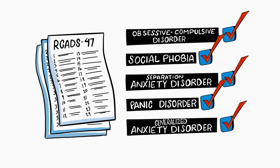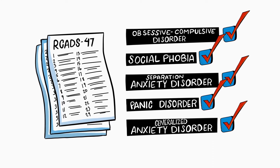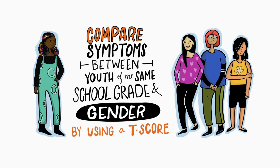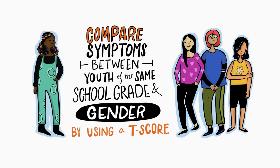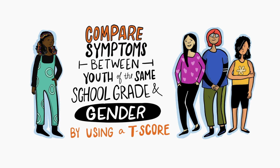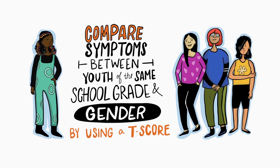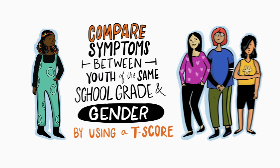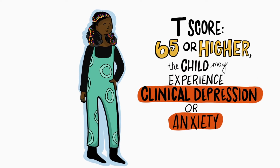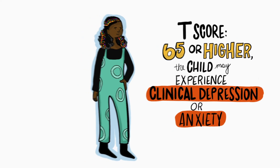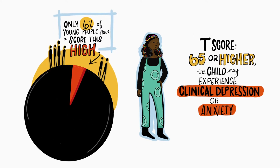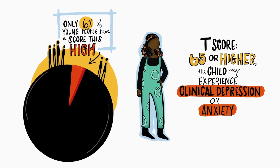To know how severe symptoms are, you can convert the RCADS score into what's called a standardized T-score. This T-score helps you understand how the young person's symptom levels relate to those of youth with the same school grade and gender in the general population. If this T-score is 65 or higher, the child or youth may experience clinical depression or anxiety — only 6% of young people in the general population have scores this high.